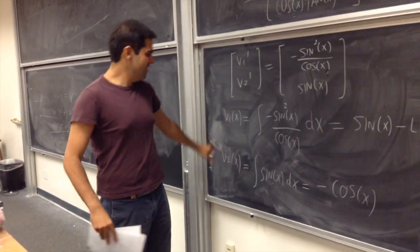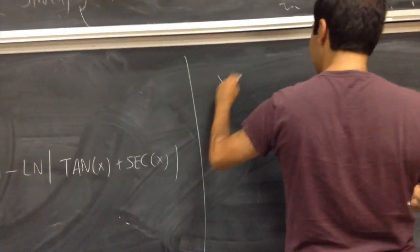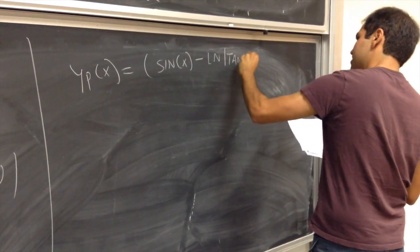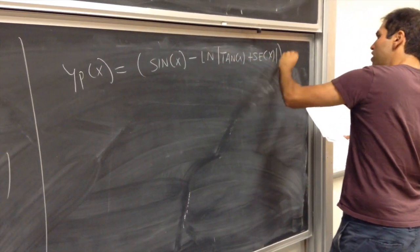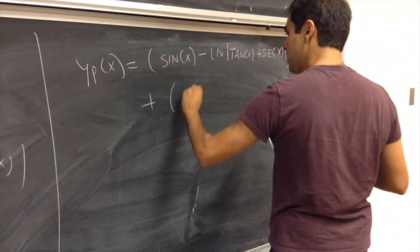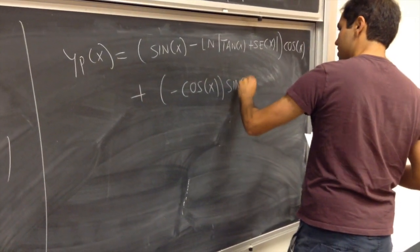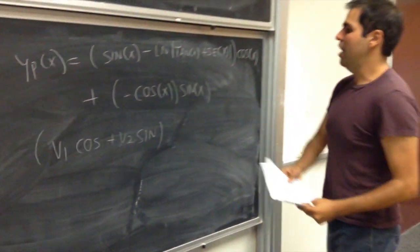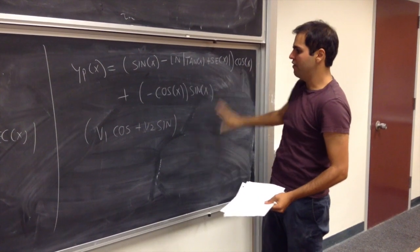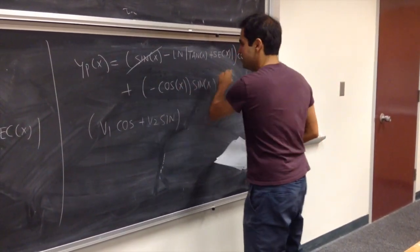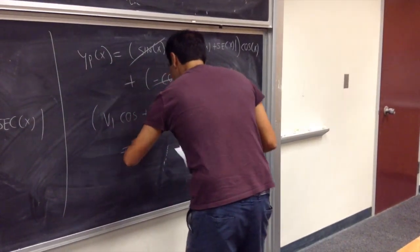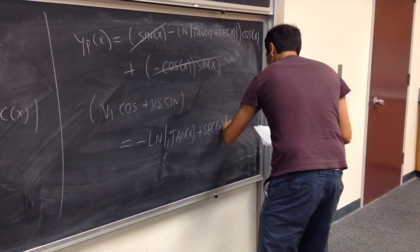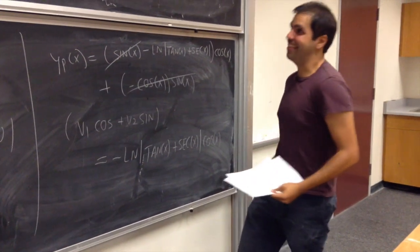Fantastic! We found v1 and v2, so we can write the particular solution: y_p = v1·cos(x) + v2·sin(x) = [sin(x) − ln|tan(x) + sec(x)|]·cos(x) + [−cos(x)]·sin(x). Expanding, the sine(x)·cosine(x) and −cosine(x)·sine(x) terms cancel, and we end up with y_p = [−ln|tan(x)| + sec(x)]·cos(x). Good luck guessing that with undetermined coefficients!